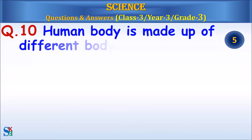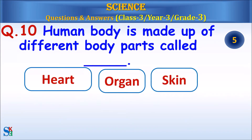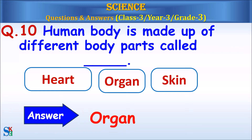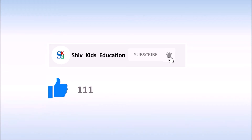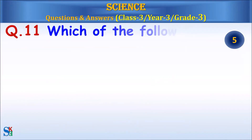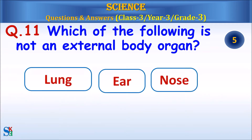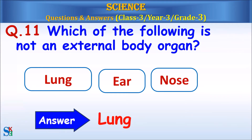Question 10: The human body is made up of different body parts called heart, organ, or skin? Answer: Organ. Question 11: Which of the following is not an external body organ — lung, ear, or nose? Answer: Lung.